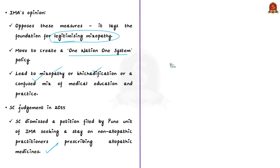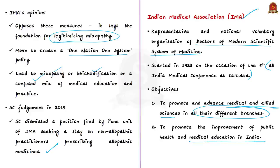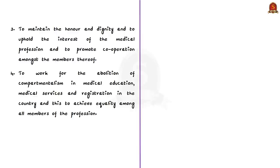As a protest, IMA gave a call to all doctors practicing modern medicine to withdraw non-essential services and non-COVID services on December 11th. The modern versus traditional medicine tussle is moving to a different dimension. Regarding the Indian Medical Association: IMA claims to be the only representative national voluntary organization of doctors of the modern scientific system of medicine. It was started in 1928 on the occasion of the fifth All India Medical Conference at Calcutta. Its objectives include promoting and advancing medical and allied sciences, promoting improvement of public health and medical education in India, maintaining the honor and dignity of the medical profession, and working for the abolition of compartmentalism in medical education, medical services, and medical registration in the country.